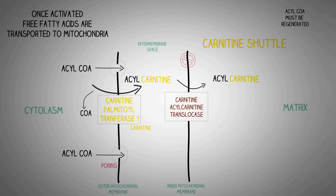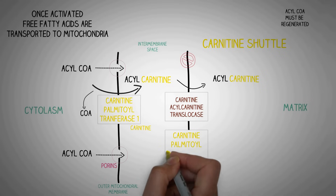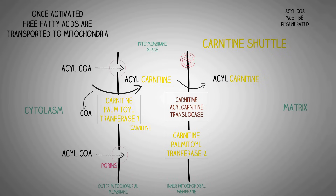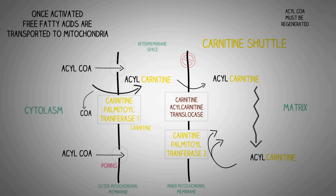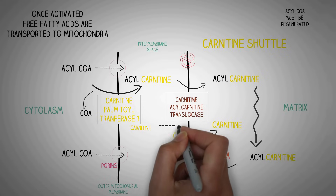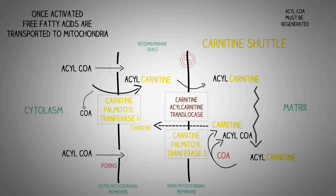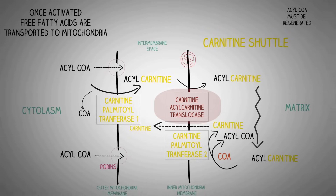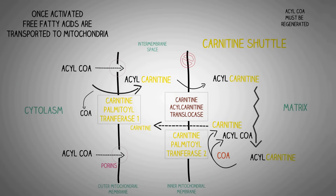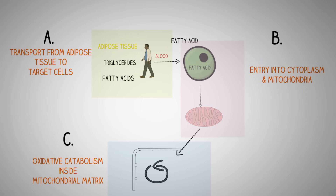Since acyl-CoA is the only form of fatty acid that can be metabolized inside the mitochondrial matrix, it must be regenerated. This is done by the enzyme carnitine palmitoyl transferase 2 (CPT2), which attaches coenzyme A again to the acyl molecule and regenerates carnitine. The regenerated carnitine is transported back into the intermembrane space to be reused by CPT1. The carnitine acyl-carnitine translocase exchanges one molecule of carnitine into the intermembrane space for one molecule of acyl-carnitine into the matrix. This is how the free fatty acid is transported into the mitochondrial matrix.